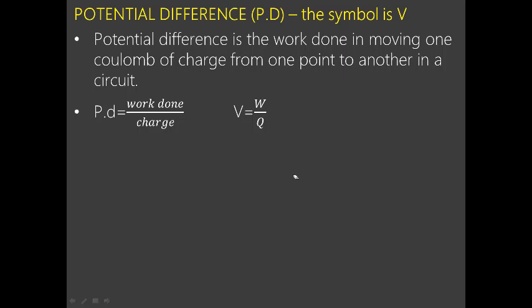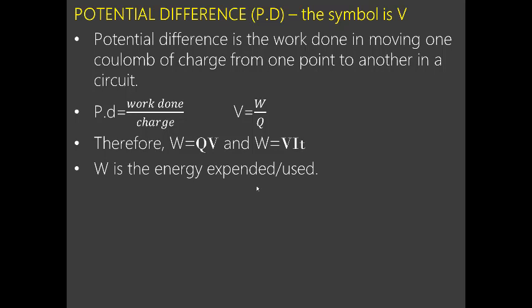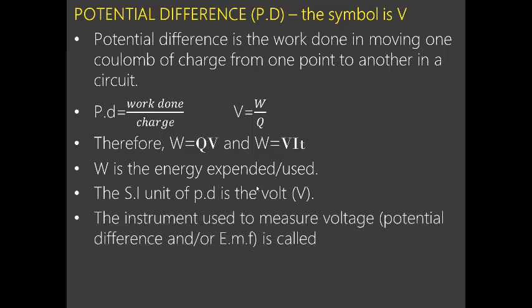So W is the work done (energy expended), Q is the charge, and V = W/Q. The work done is always equivalent to the energy used. The SI unit of PD is the volt. The instrument used to measure voltage, potential difference, and EMF is called a voltmeter.